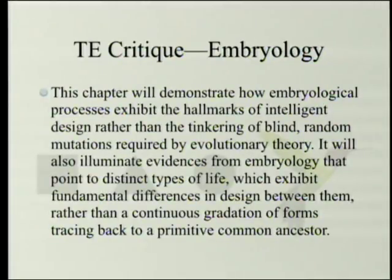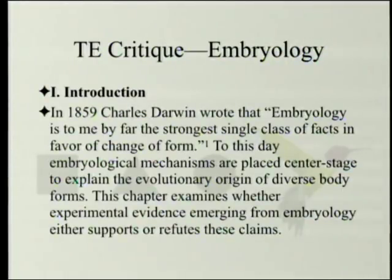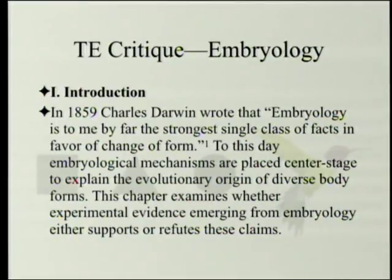The chapter will also illuminate evidence from embryology that points to distinct types of life which exhibit fundamental differences in design between them, rather than a continuous gradation of forms tracing back to a primitive common ancestor. In 1859, Charles Darwin wrote that embryology is to him by far the strongest single class of facts in favor of change of form. To this day, embryological mechanisms are placed center stage to explain the evolutionary origin of diverse body forms. This chapter examines whether experimental evidence from embryology supports or refutes these claims.